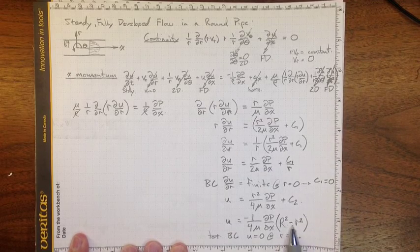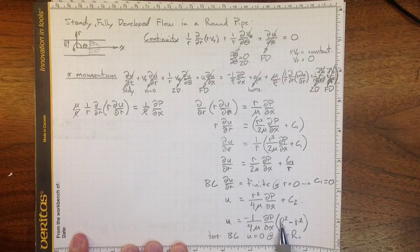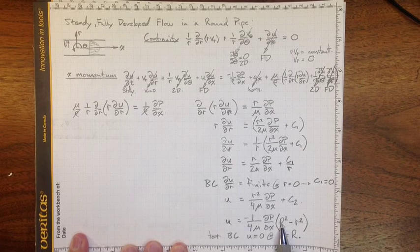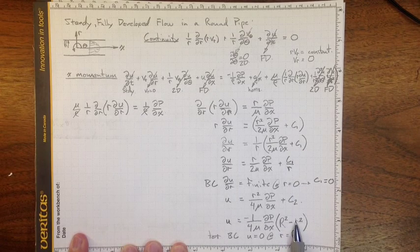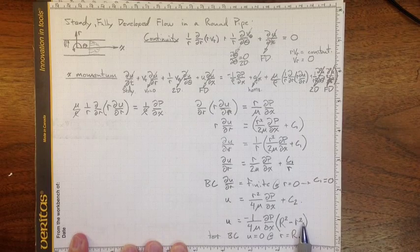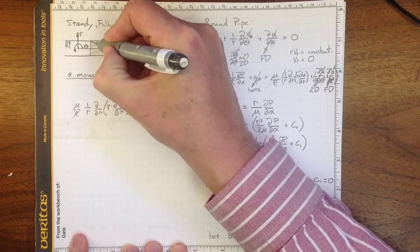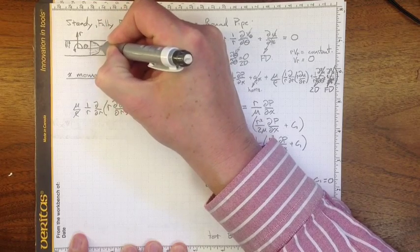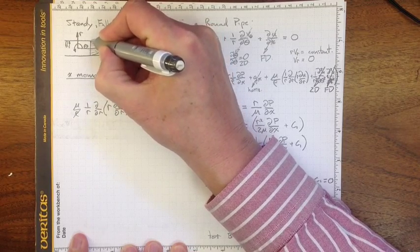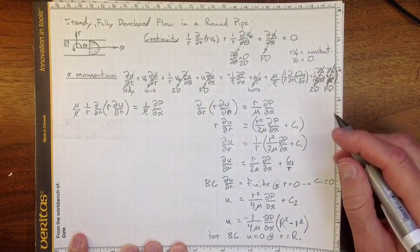we can work our way down to this equation for the velocity profile. So it's parabolic in the pipe. You've got this capital R, the inside radius of the pipe, minus small r, the location in the pipe squared. So you wind up with a velocity profile that has that characteristic, peaks in the middle and tapers off to zero at the sides, just as we'd expect.